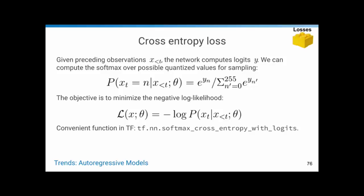For training, the simplest loss is cross-entropy: given preceding observations, compute logits over y representing the probability of the intensity being in each quantized bin, apply softmax, and minimize negative log-likelihood. In TensorFlow, softmax cross-entropy with logits is the useful function. One disadvantage of cross-entropy loss is that with many possible values, memory consumption is very large.